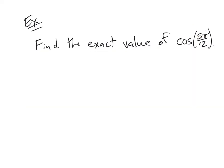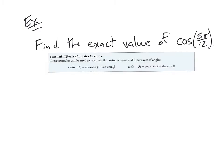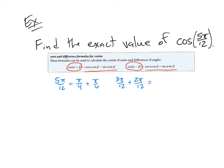Let's try another one. In this example, we're going to do a similar problem but for the cosine of 5 pi over 12. We'll use the cosine formulas. We need to turn 5 pi over 12 into either a sum or difference of two values we know. I happen to know that 5 pi over 12 equals pi over 4 plus pi over 6, because pi over 4 is 3 pi over 12 and pi over 6 is 2 pi over 12, which add up to 5 pi over 12.